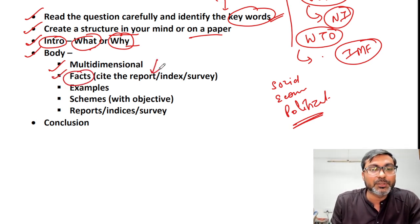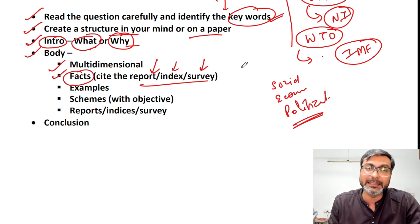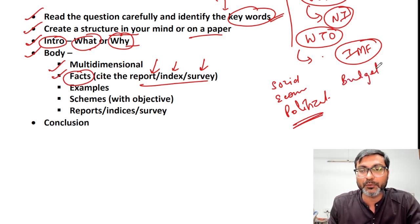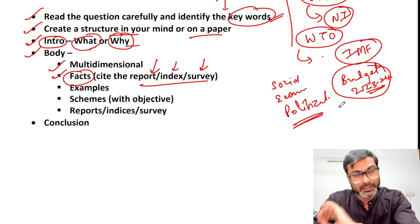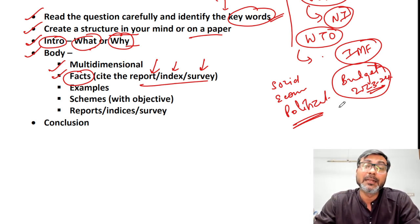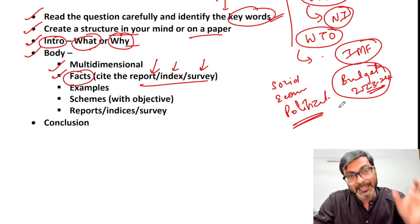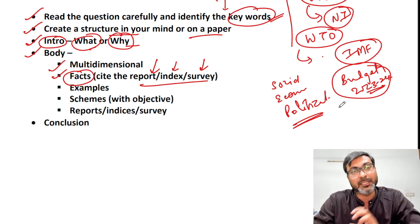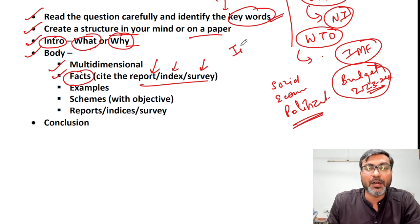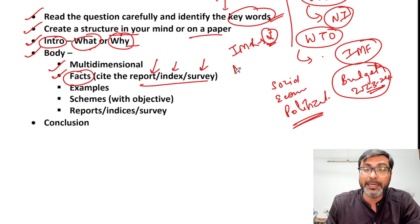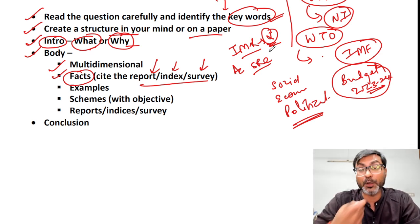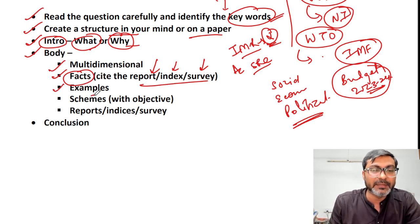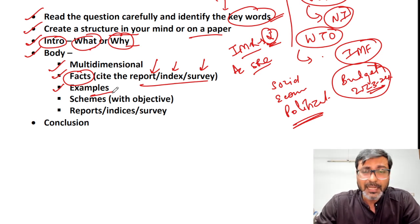If you are writing any fact, you need to cite the report, index, or survey — this is very important, especially in ESI. For example, if you write 'the current IMR of India is X' versus 'according to the Sample Registration Survey, the current IMR of India is X' — these two statements are very different. In the second, you are citing the source, and that creates a positive impact on the examiner. Then of course, give relevant examples — don't force examples in unnecessarily.